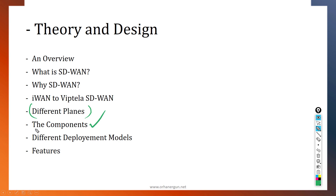I will go through the components. We will talk about what vManage is, what we do with vManage, and its capabilities. Then we will talk about vSmart — why we need vSmart, and why we need redundancy and high availability for it. Then we will talk about vBond and exactly what vBond does.